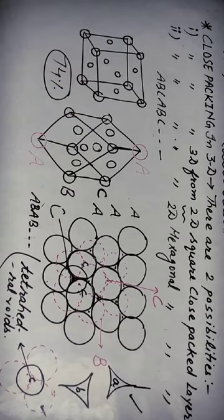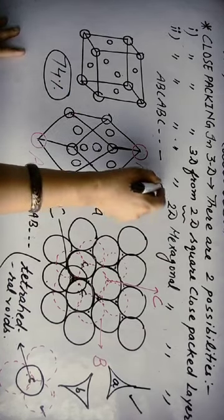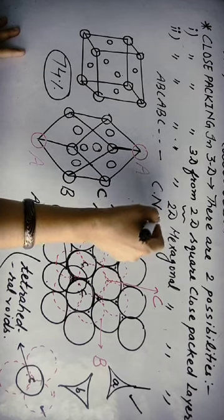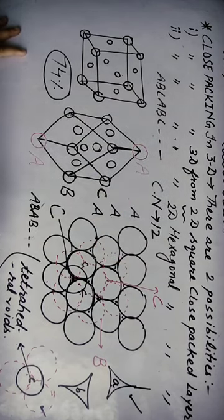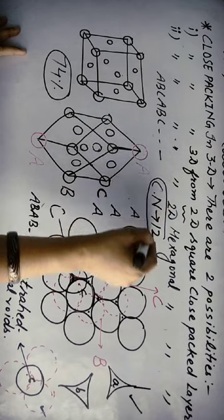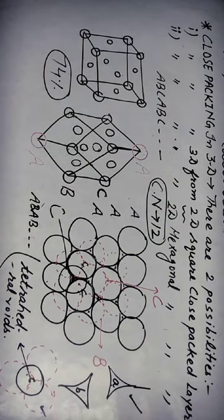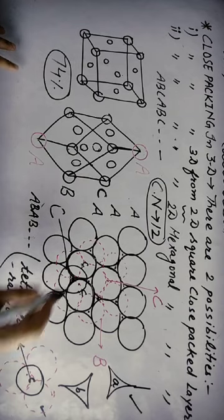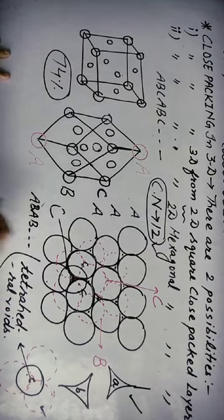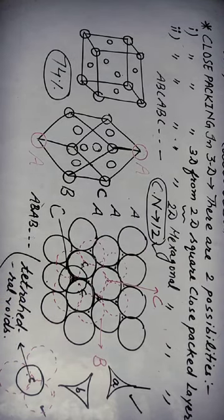In both HCP and CCP arrangements, the coordination number is 12. Each sphere has 6 nearest neighbors in the same layer, 3 spheres in the upper layer, and 3 spheres in the lower layer, making a total of 12 touching spheres. So the coordination number is 12 in both HCP and CCP arrangements.